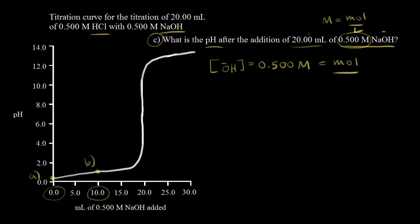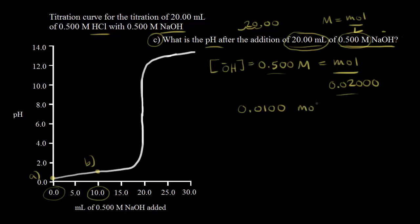How many liters do we have? We have 20 milliliters, which is equal to 0.02 liters. So to find how many moles, we multiply 0.5 by 0.02, and we get 0.01 moles of hydroxide ions.